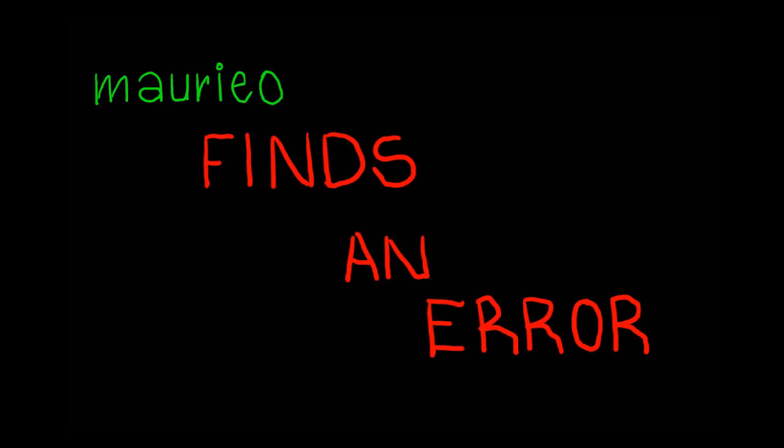In this video we're going to be looking at how to find errors in traverses — gross errors either in a bearing or in a distance. These are usually the result of wrong information being input, transposition of figures, and that sort of thing. I'm going to show you a few tips on how you might find an error when your traverse doesn't close.